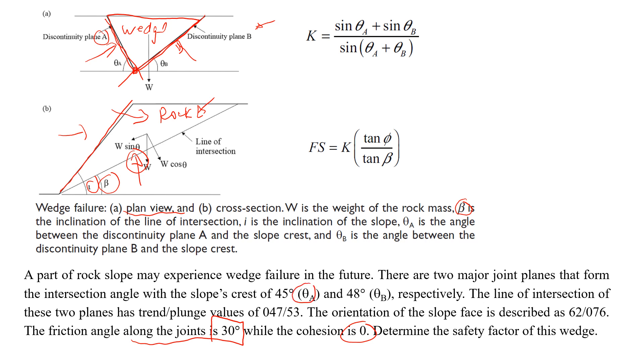And what else are we given? So we are given the inclinations of the discontinuity planes A and B. So this one is the angle between this plane and the slope's crest, so that will be theta A and theta B.